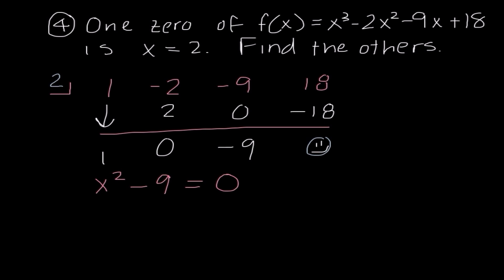And if I want to find the other zeros, I have to set it equal to 0. Now, we may remember that we can actually factor this to x plus 3, x minus 3. And I'm going to set these equal to 0. So I get x equals negative 3 and x equals positive 3. So that would be my answer because those are the two other zeros to this function.